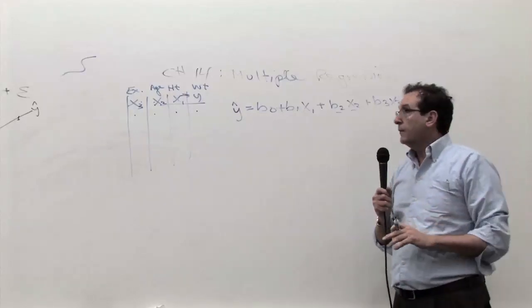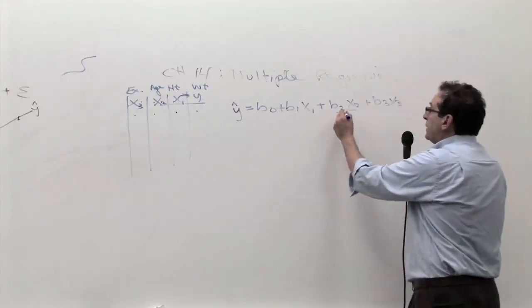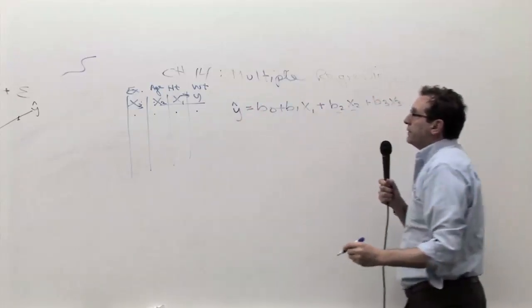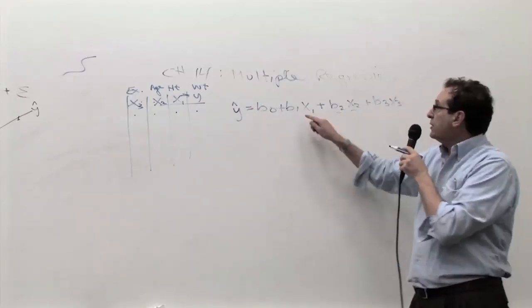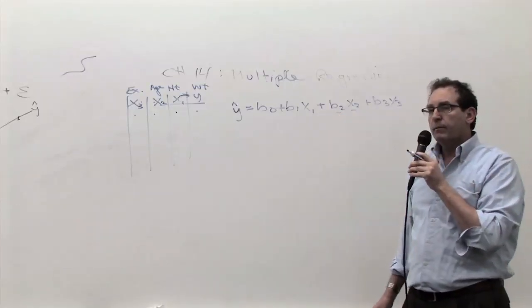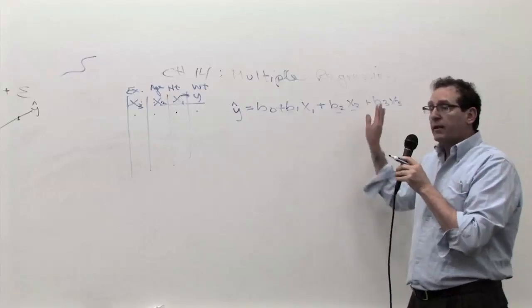What's b2? B2 is just the impact that variable x2 has on the y. I mean, just like a slope. I mean, there's a slope and another slope. Print it out. You don't have to calculate this.